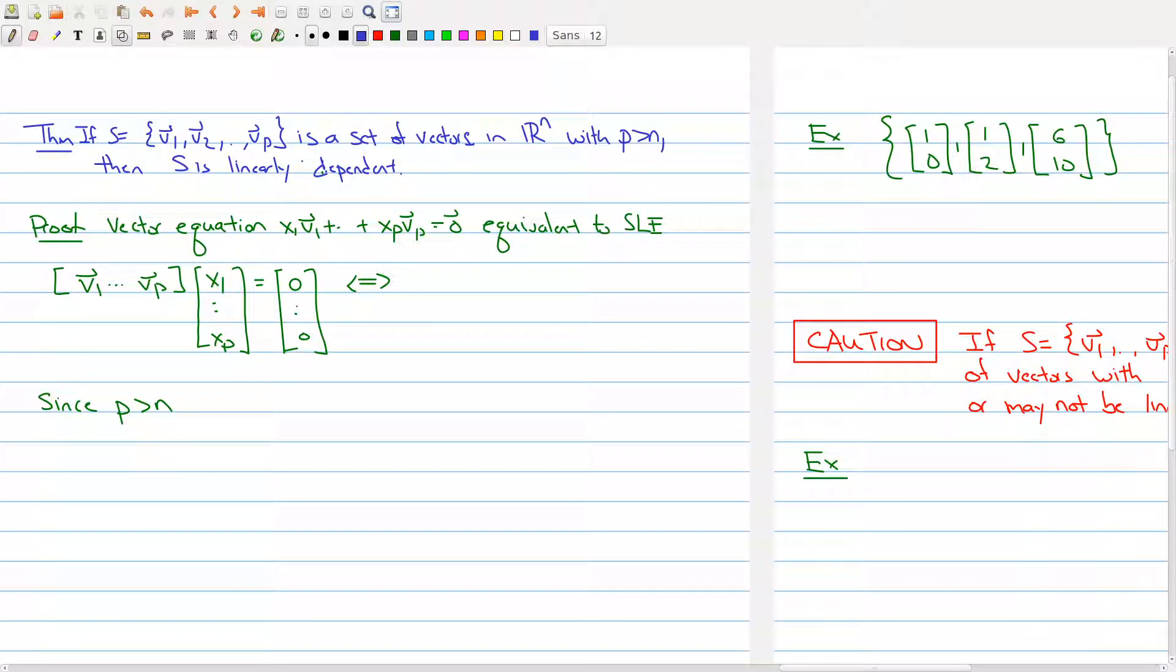Welcome to the last part of lecture 7 on linear independence. The next theorem is quite a handy theorem. It allows us to immediately decide whether a set of vectors in Rn is linearly dependent simply by just counting the number of vectors in your set.